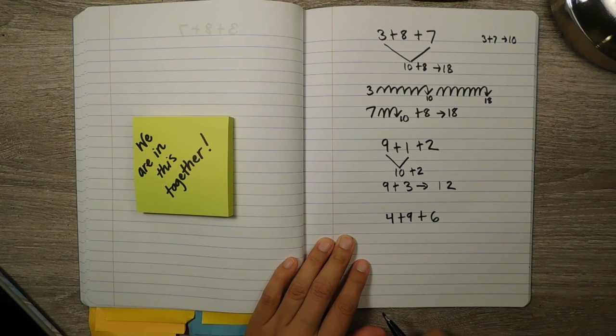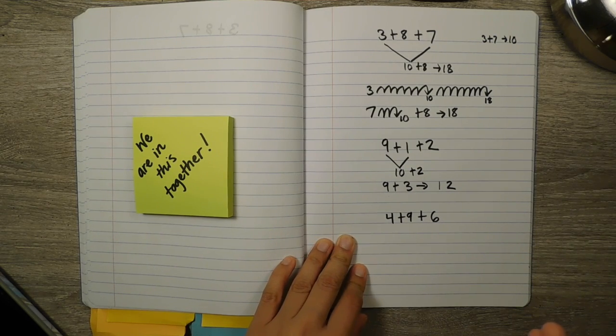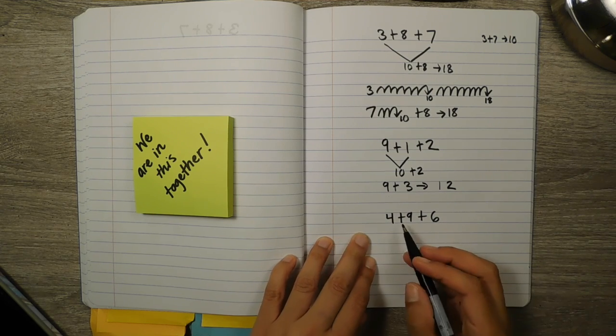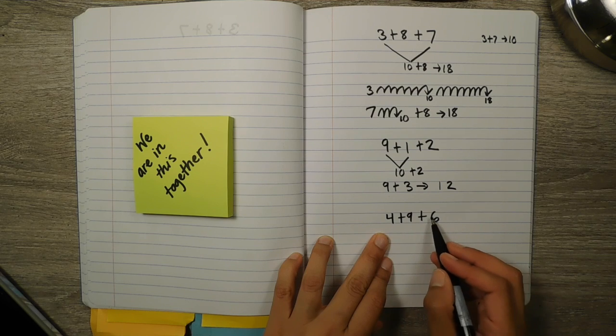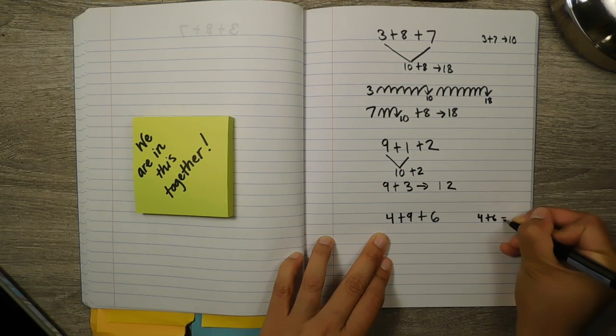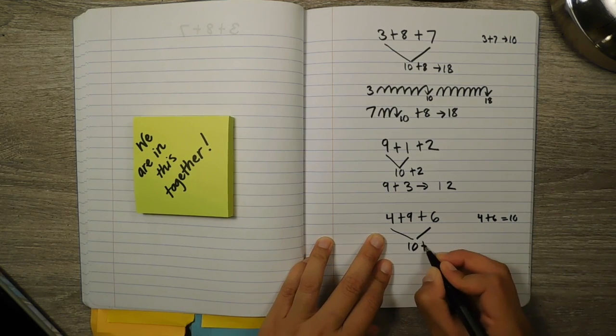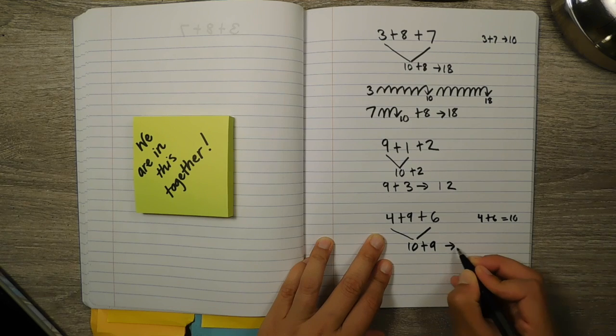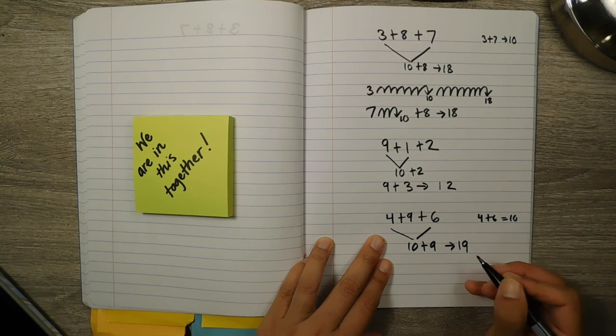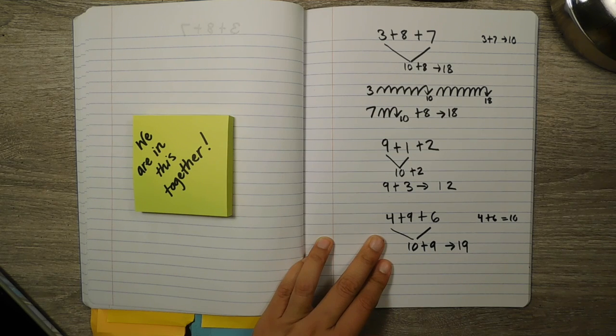Okay, come back together. So again, if you were using your strategies of trying to use your friendly numbers, then you might have seen that 4 and 6 were in this number sentence. Remember that 4 plus 6 makes a 10. Use that knowledge and then just added the 9 to it, which would give you 19. But maybe, just maybe, some of you were practicing that trick with the 9s, so you might have done something like 4 plus, let's see, 6. So that would be a 5 to a single digit. So that would be a 1.